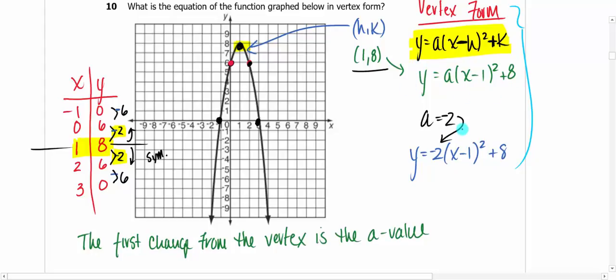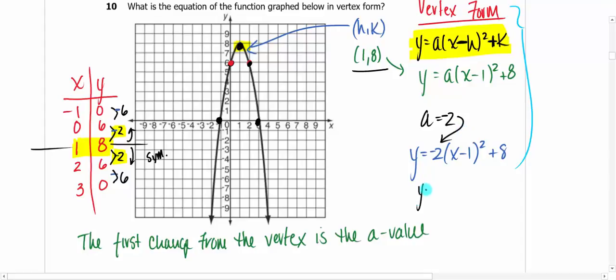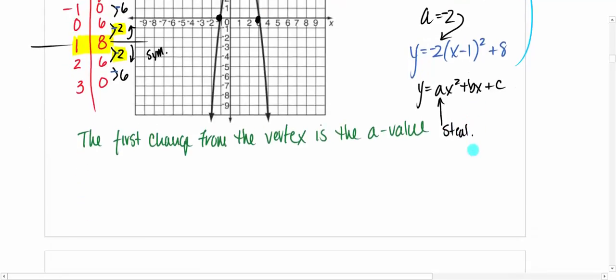On the test, it'll probably be A = 1, or they'll give it in standard form — y = ax² + bx + c — and say write it in vertex form. Remember, you can steal the A value from standard form. You don't have to calculate it, which is kind of nice. It's about the only time in your life you should steal.